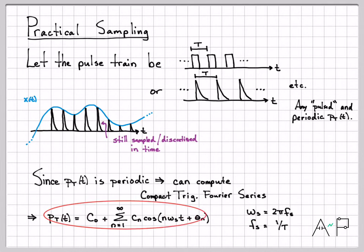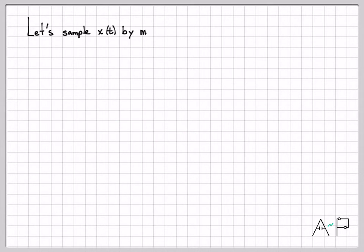I can write out P_T(t) in this form. If I wanted to, I could go compute C_0, the C_n's, and the theta_n's given some specific instance of the waveform I'm working with. That's something we'll do in the next video. Right now we're going to keep it just general.